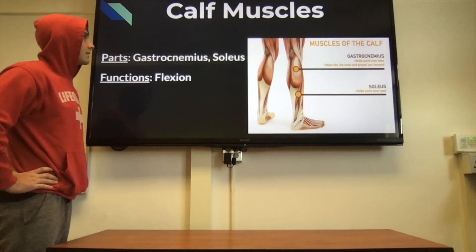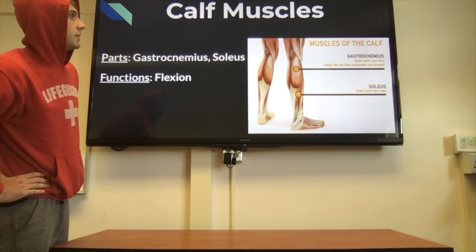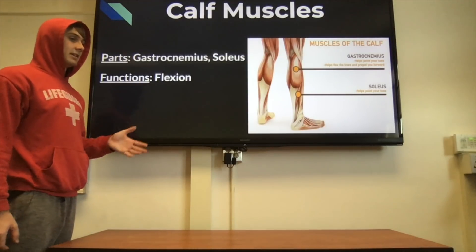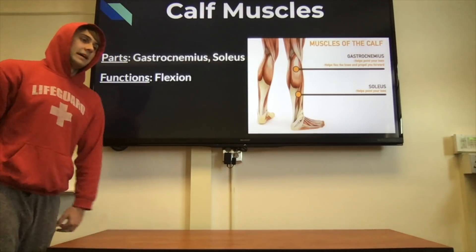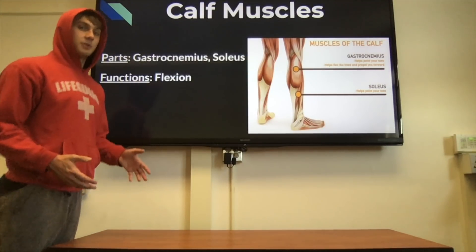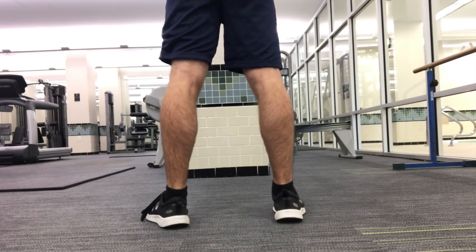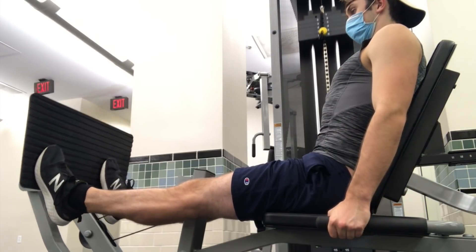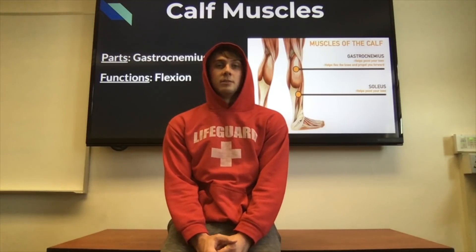There are two muscles in the calf: the gastrocnemius and the soleus. Both are responsible for pointing your toes and flexing the foot — specifically plantar flexion, the pushing of the foot down. The calves are worked when you're standing on your tiptoes. Exercises include standing dumbbell calf raises or machine calf extensions. The calves are one of the smaller muscle groups and don't need as much training as the abs or quads, but they shouldn't be neglected.